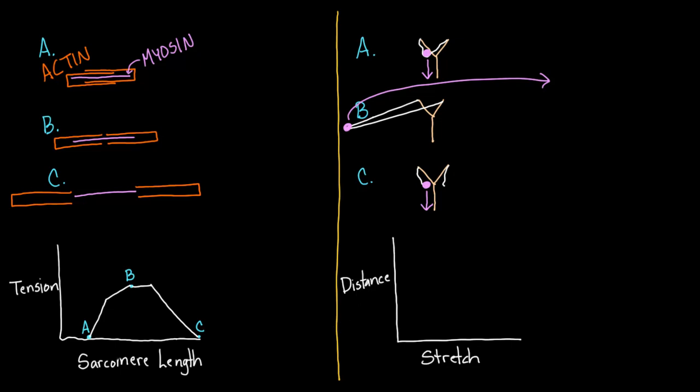And so in terms of distance, I can actually plot that out. For A, I had almost no distance, zero distance. And for C, kind of the same thing, really no distance. But for B, I had a lot of distance. So I actually did really well with B.